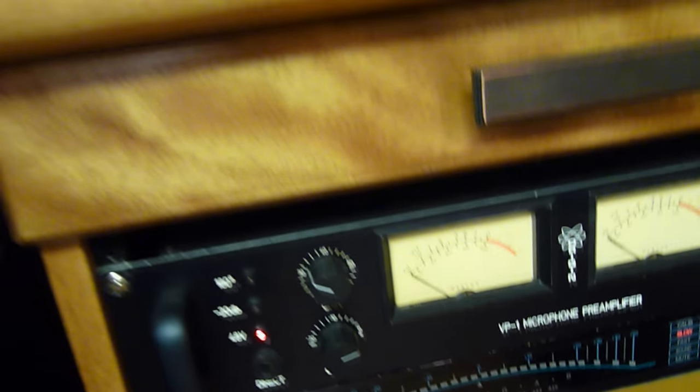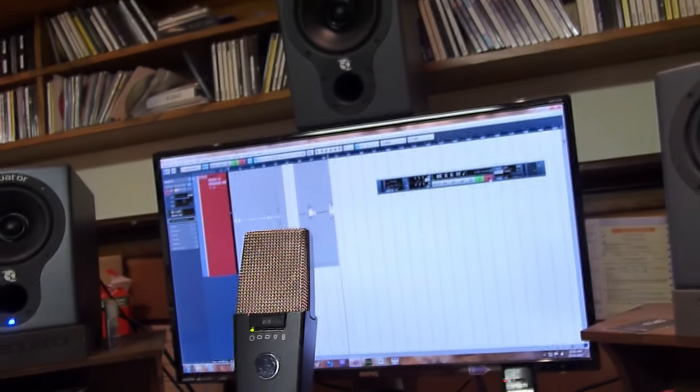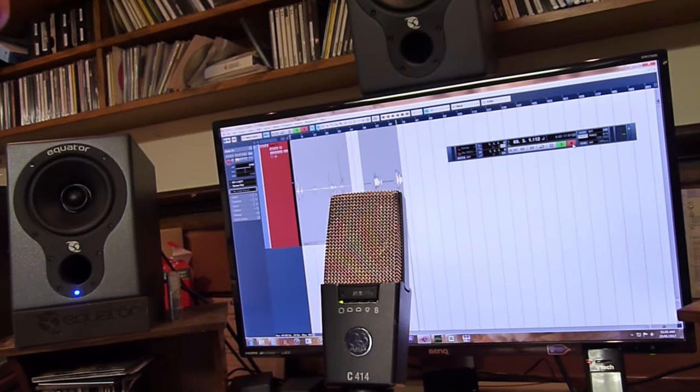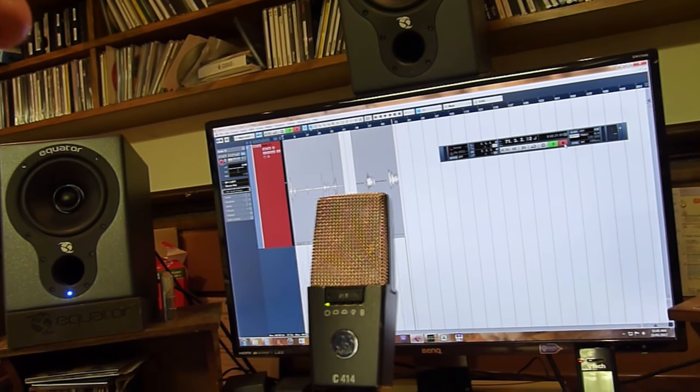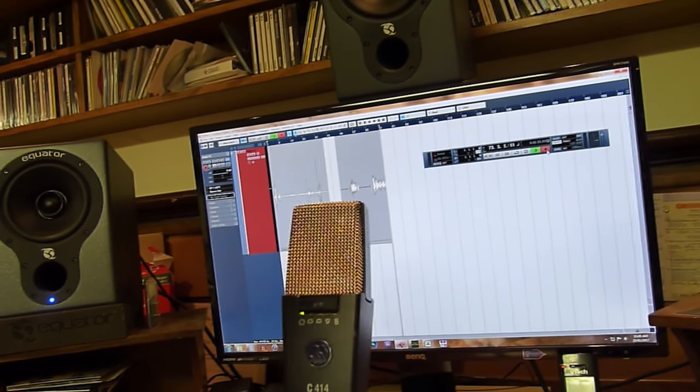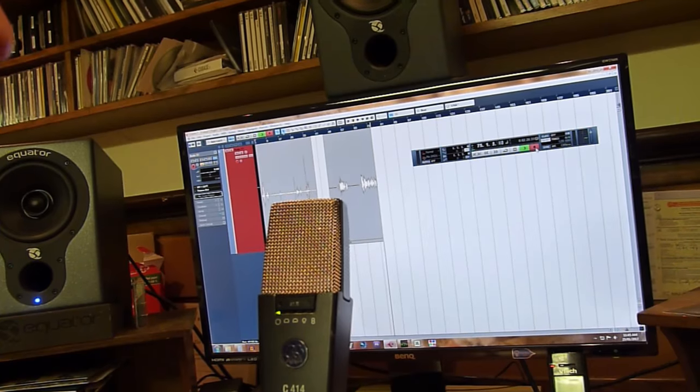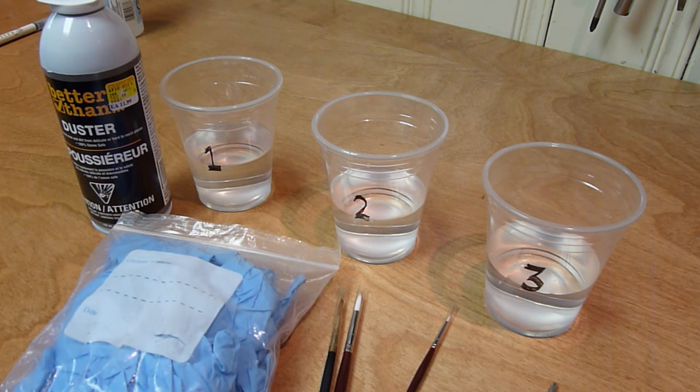Check one two, testing one two. So what we have here today is an AKG C414 microphone, this is the XLS model. As you can hear in the background it's a bit noisy, we've got some problems so we're going to clean it and I'm going to show you how I do it.